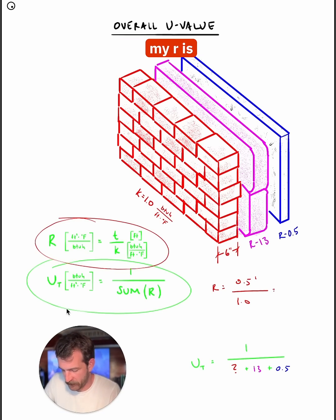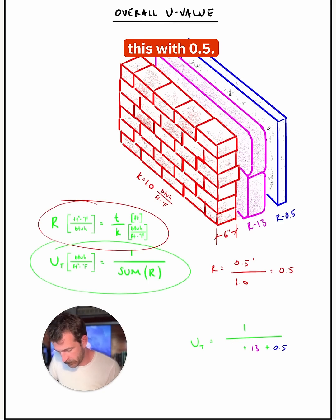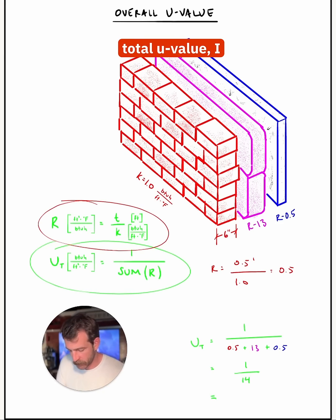So with that pretty straightforward math, my R is equal to 0.5. Now I can replace this with 0.5. In solving for total U-value, I get 0.071.